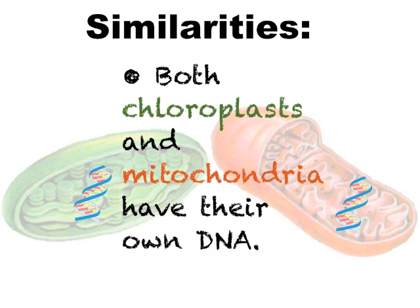Both chloroplasts and mitochondria have their own DNA molecules. These organelles use their own DNA to code for proteins that are necessary for the organelles to perform their functions. They act as individual organisms within a cell — they can change shapes, move, and reproduce. They reproduce by splitting, as do most prokaryotic organisms such as bacteria.